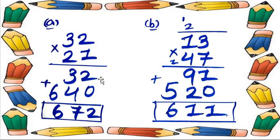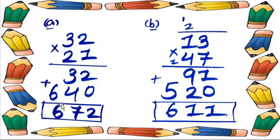Step 1 is complete. Before starting step 2, we must put the compulsory zero. Then we multiply with 2: 2 multiplied by 2 is 4, and 2 multiplied by 3 is 6. So step 2 gives us 64.